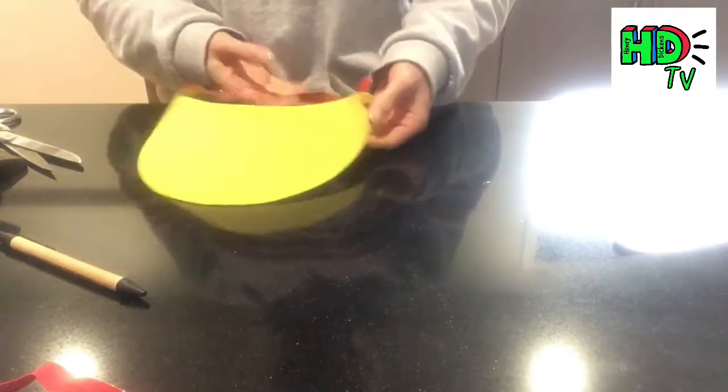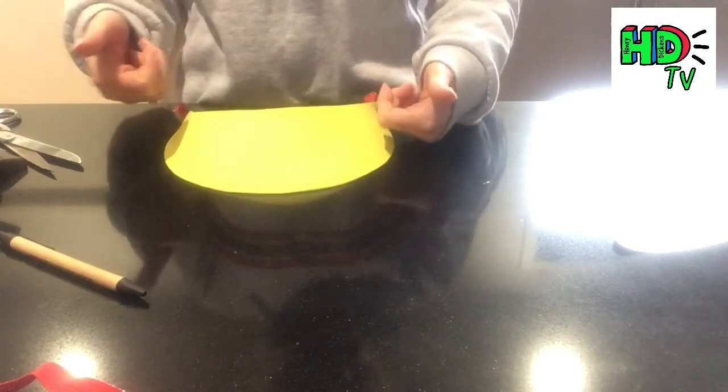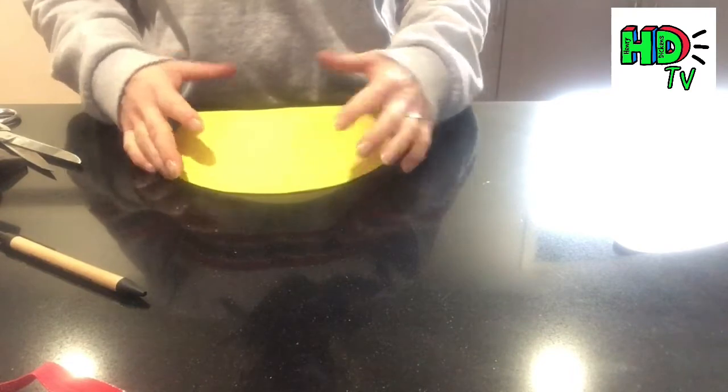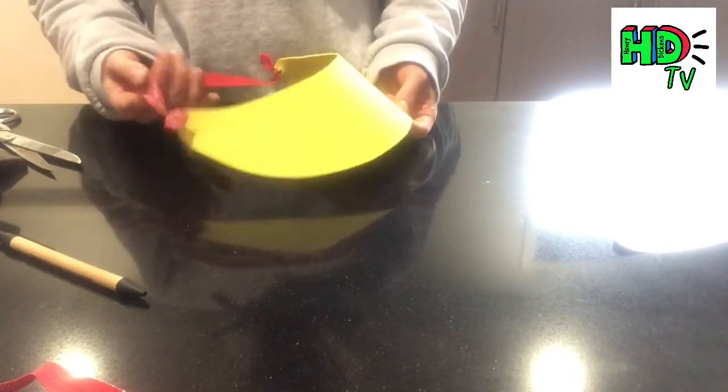And there is your really simple sun visor. Now you can decorate this part using pens or paint (you will have to let the paint dry), or you can stick foam shapes onto this to decorate it to make it as original and different as you'd like.